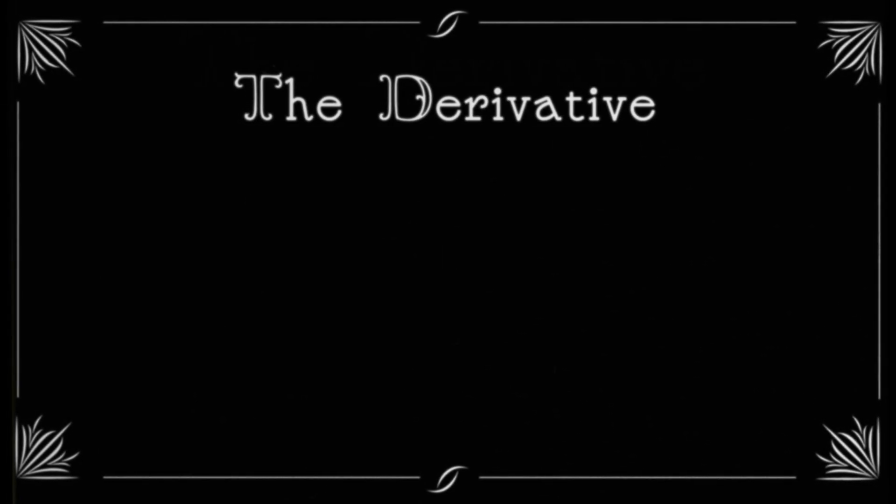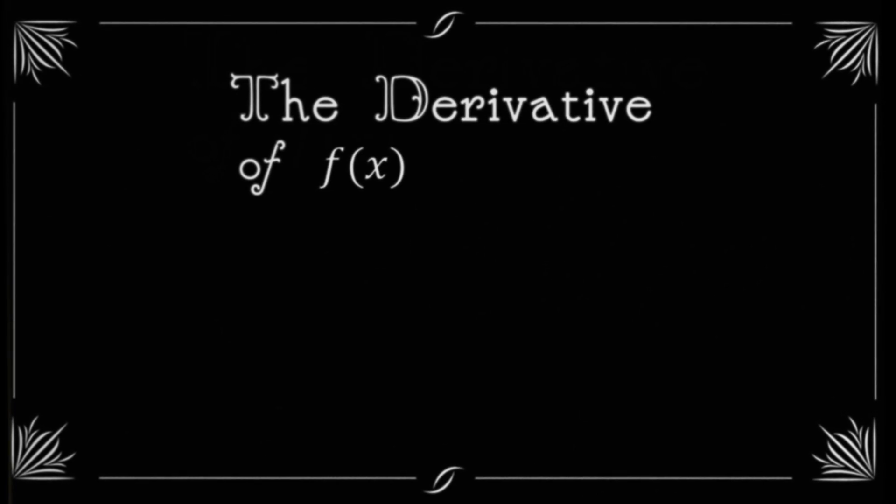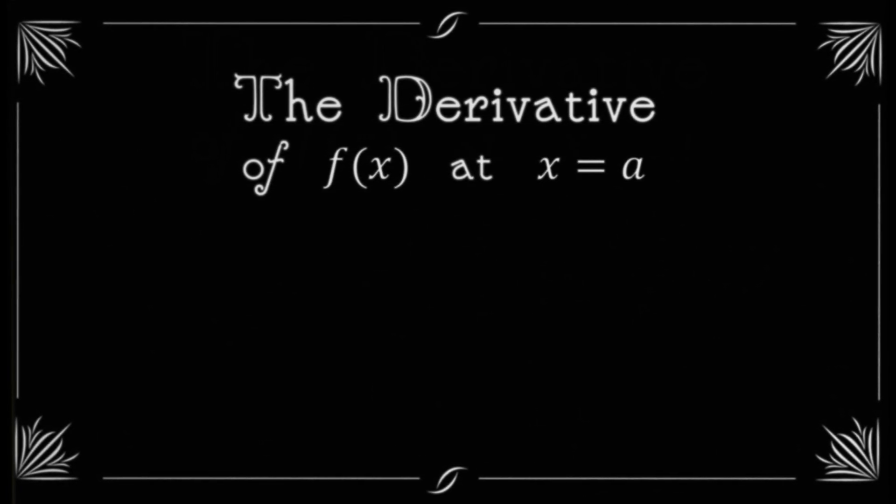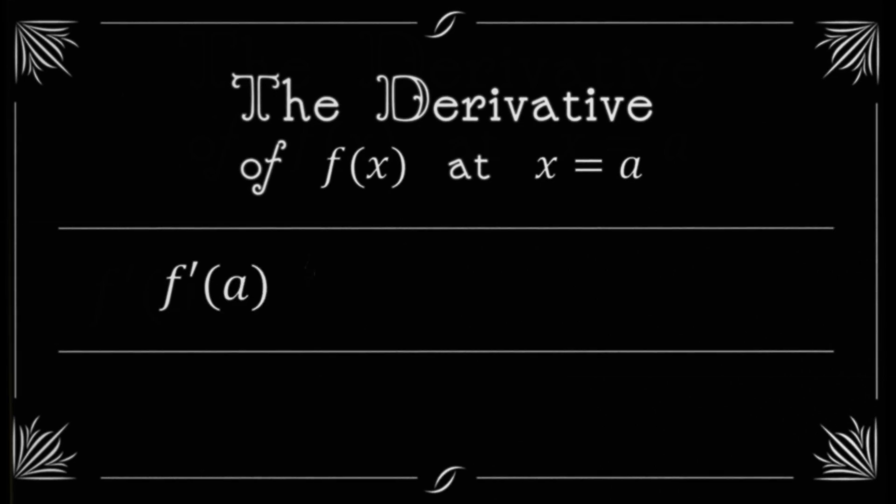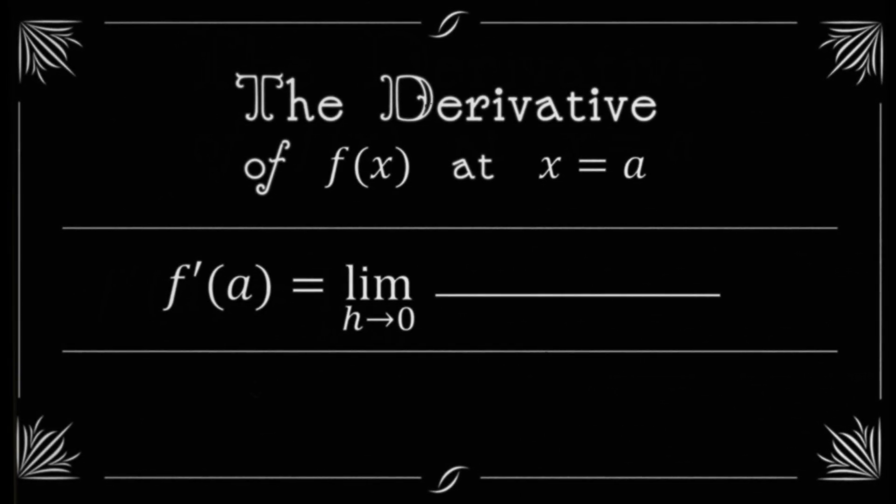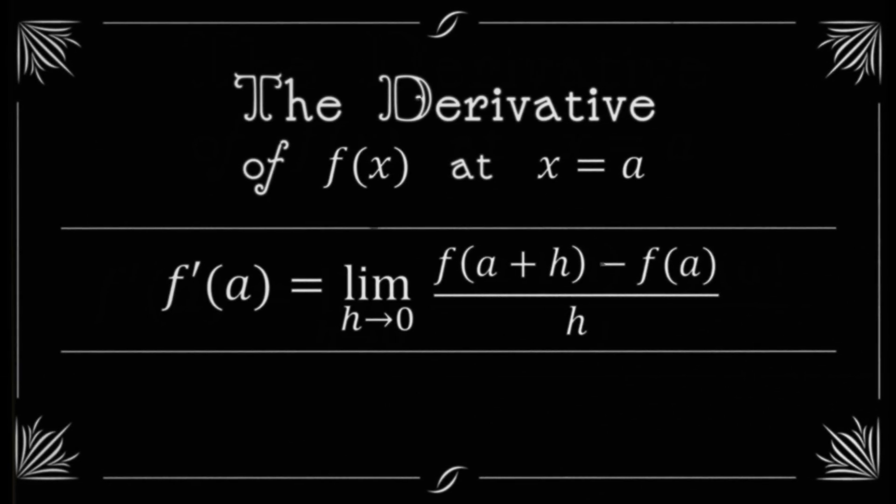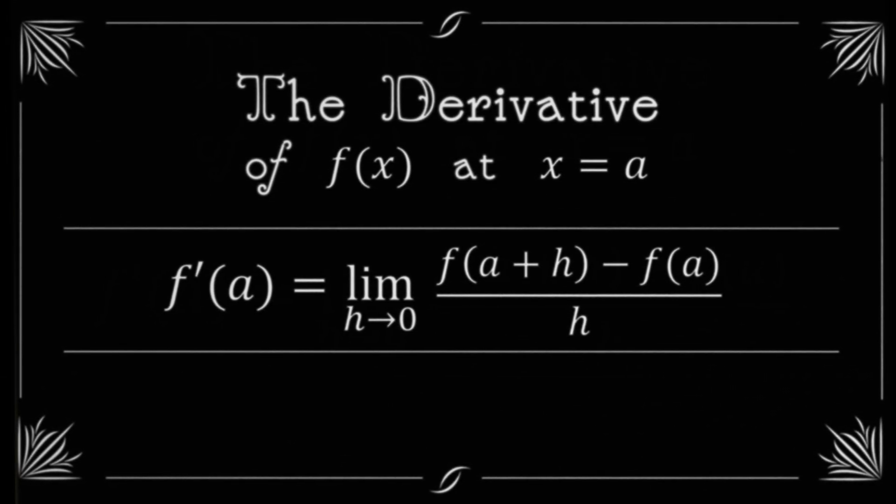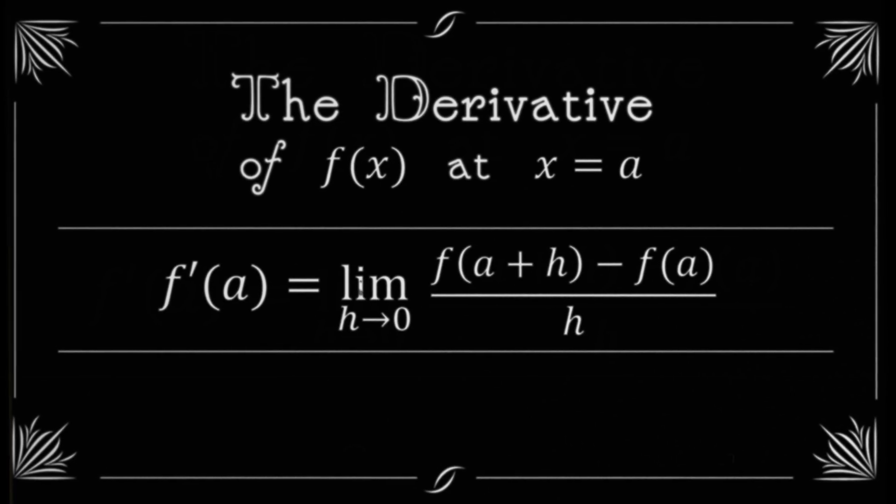The derivative of f of x at x equals a, denoted f prime of a, is the limit as h goes to zero of f of a plus h minus f of a all divided by h. That's the definition. Hopefully you remember that.